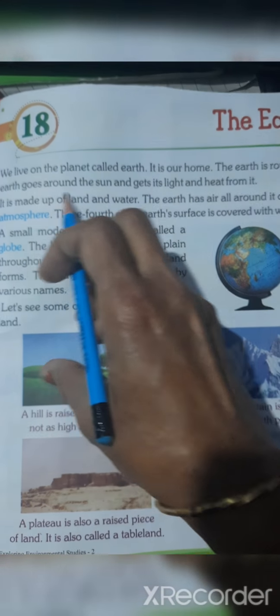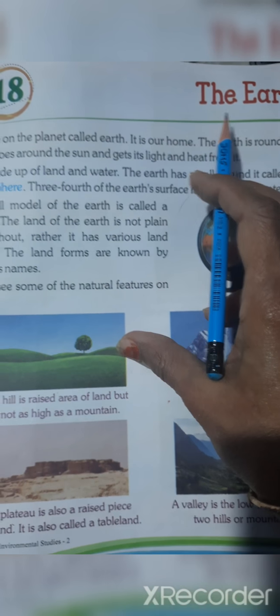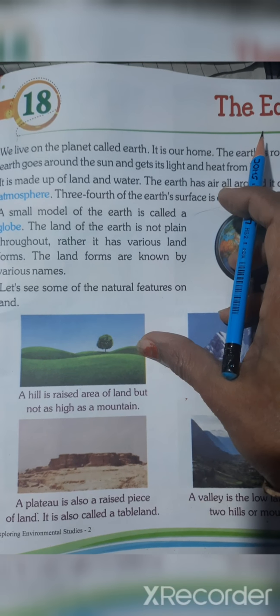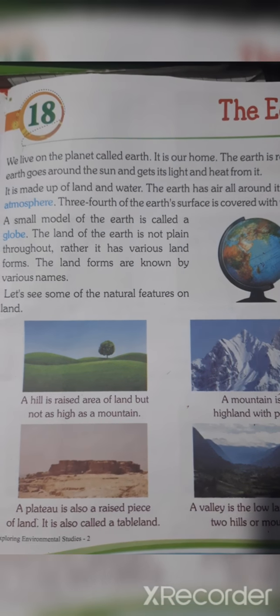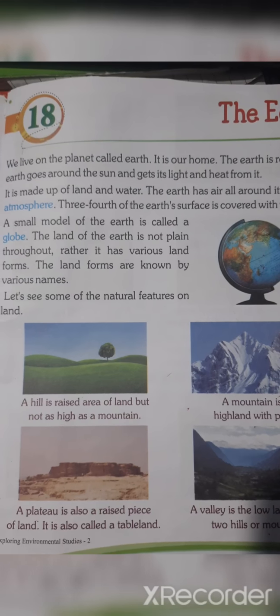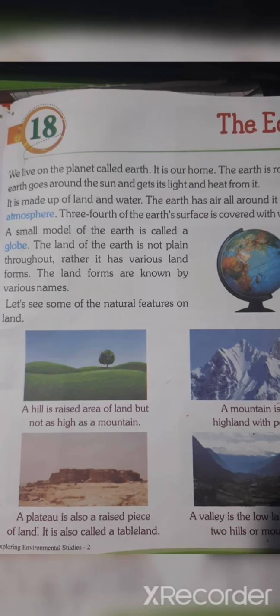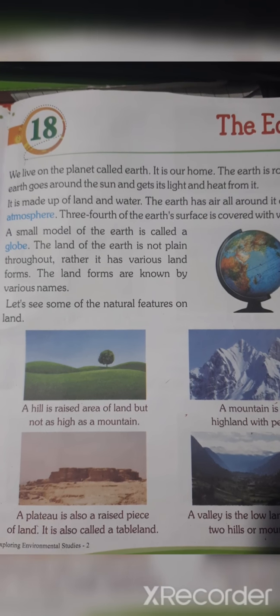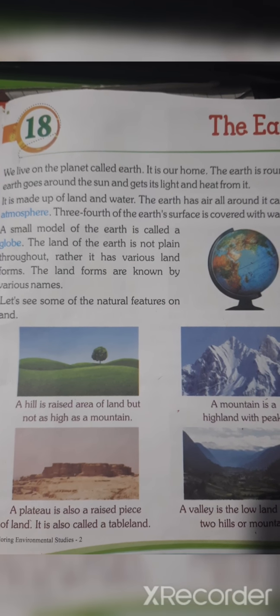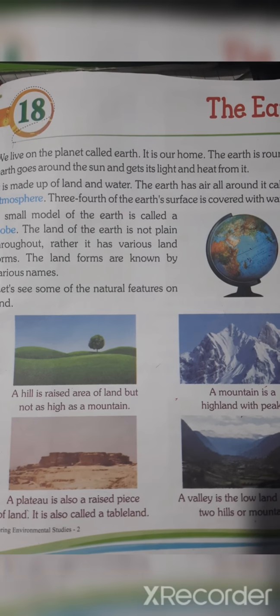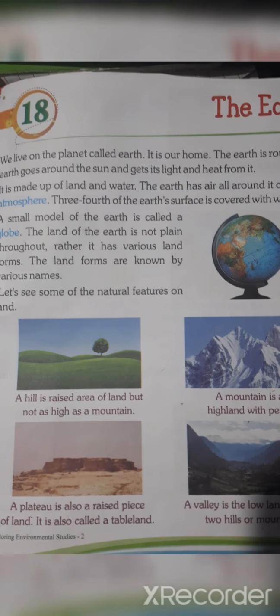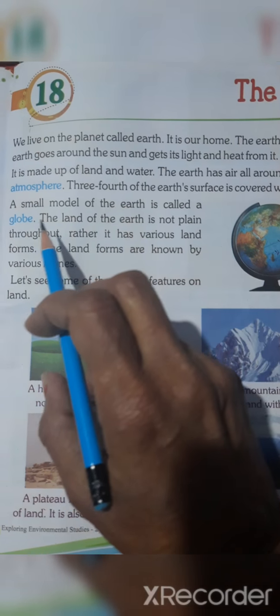Children, in last class we learnt about the earth. What do we see on the planet that is called earth? We talked about different kinds of places, areas, lakes, water parts, and land parts. So let's read the chapter now.